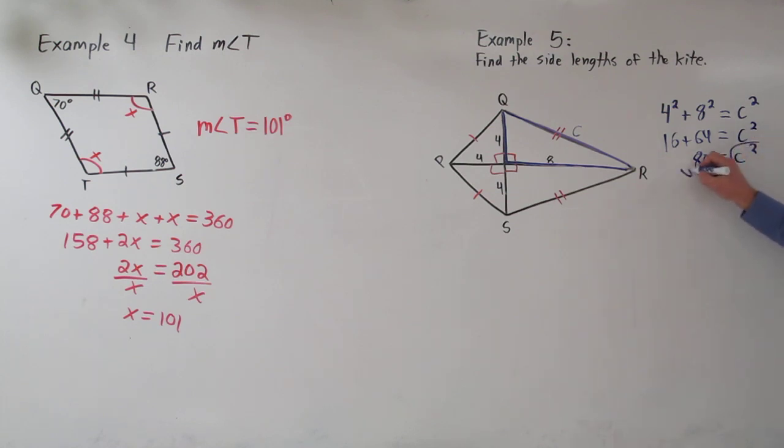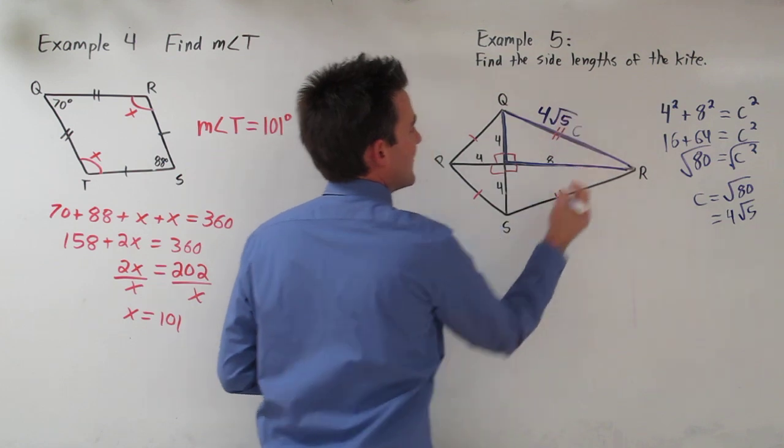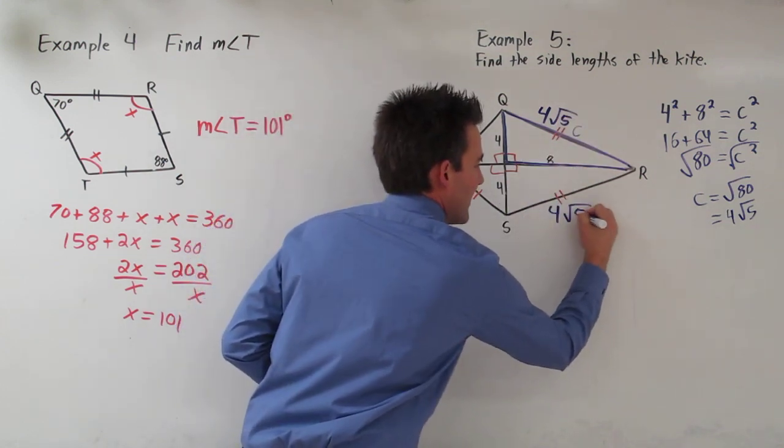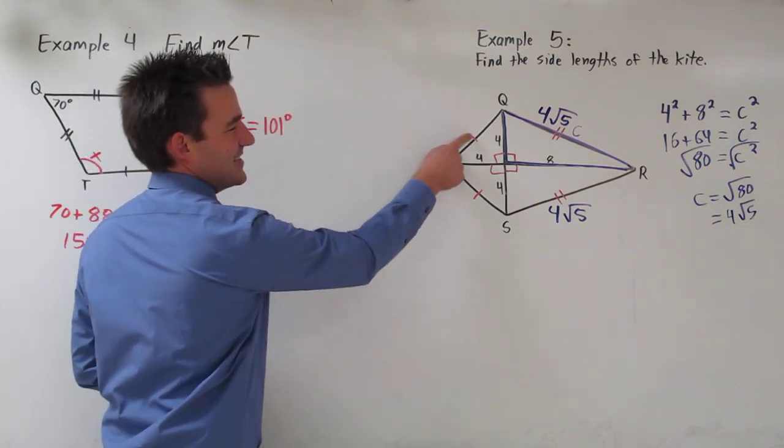So we've got to take the square root of both sides. So C is rad 80, which after we simplify it, we get 4 rad 5. Alright, that means this side right here is 4 rad 5. And since these are congruent, this is 4 rad 5. The last thing we need to find is this side.